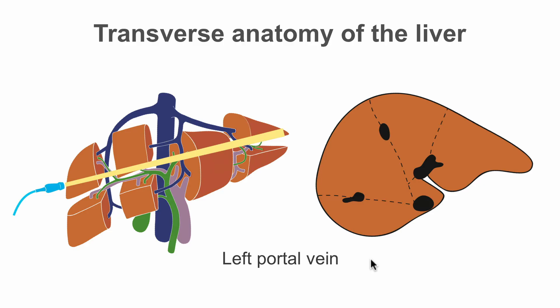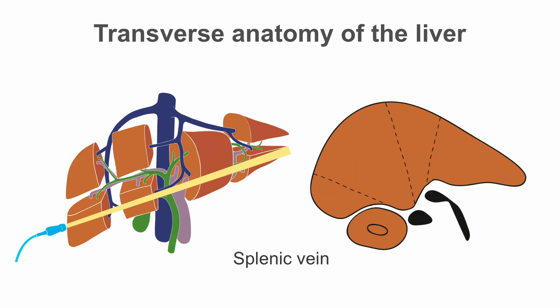The next level of transverse anatomy is the level of the portal vein branching. At this level we see segment borders 2 and 3, segment 4, segment border 8, segment 5, and segment 7. The last and most caudal level of transverse anatomy is the level of the splenic vein, where we see segments 3, 4, 5, and 6.